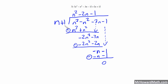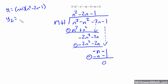We have our answer, which we can check in our calculator. In y1 we would type parentheses n plus 1 times n squared minus 2n minus 1, and in y2 we type n cubed minus n squared minus 3n minus 1 — using x in place of n for our graphing calculator. Then we check our table and make sure that y1 and y2 are both equal. As long as they are, we know that we did it correctly.